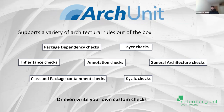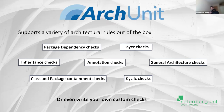ArchUnit supports a variety of architectural rules out of the box. There are general architecture checks, package dependency checks, inheritance and cyclic dependency checks. For package dependencies, it's about classes belonging to a specific package having defined dependencies — for example, a controller is dependent on the service, the service is dependent on the repository. You can write tests such that the service classes should only be called by the controller and not by the repository.